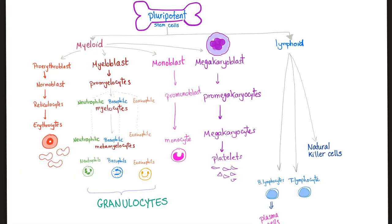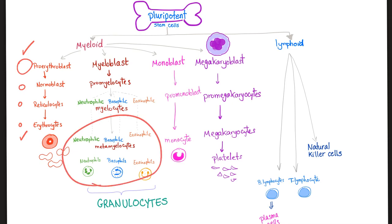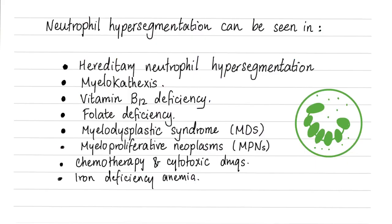As you see here, cells start as big and then get smaller and smaller. This is immature, but this is mature. When you have a problem with DNA synthesis, you end up with big cells and hypersegmented neutrophils. So what are the causes of hypersegmented neutrophils? Number one: hereditary neutrophil hypersegmentation — that's a hereditary disease.